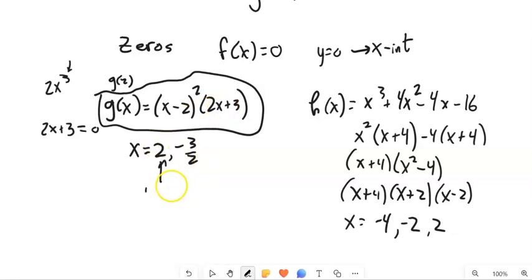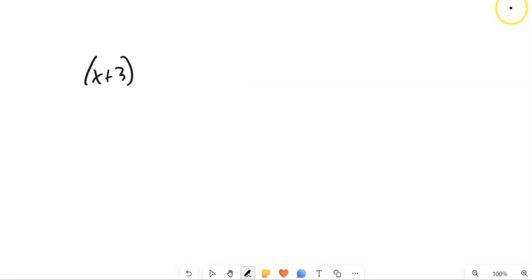So this zero, we'd say it has a multiplicity of two. So thinking about this idea of a multiplicity, a function that looked like this.